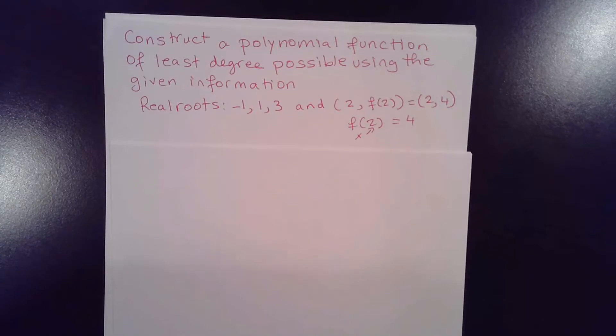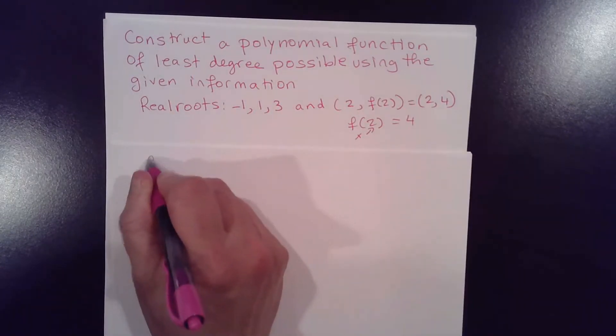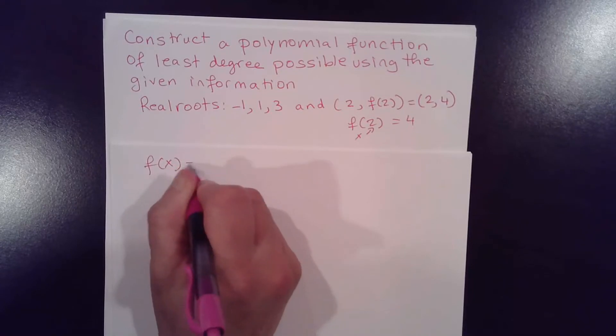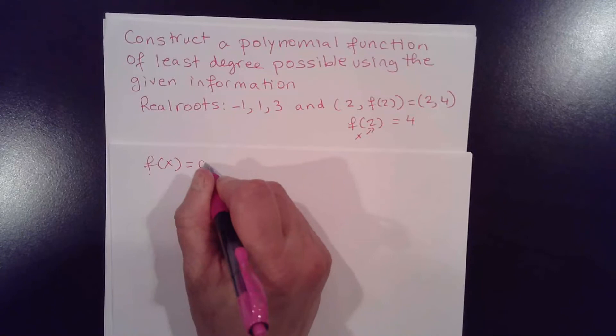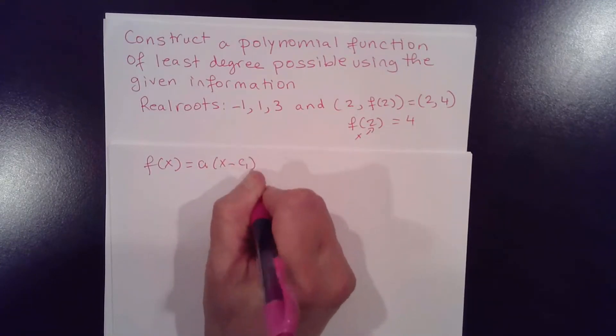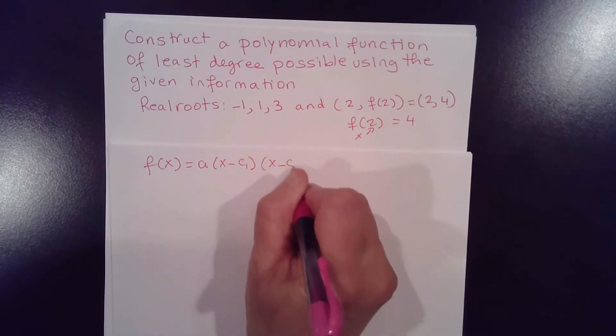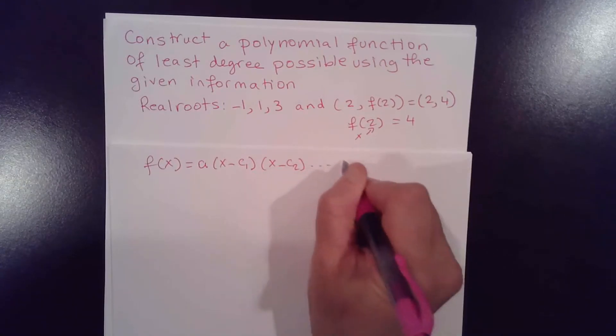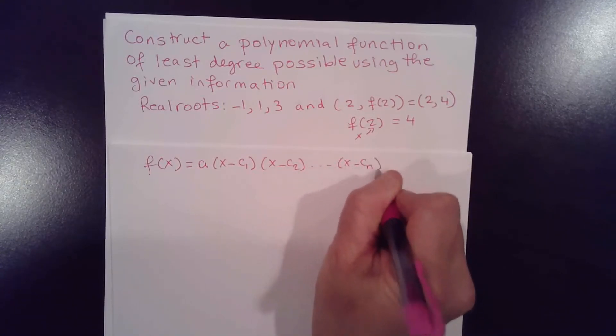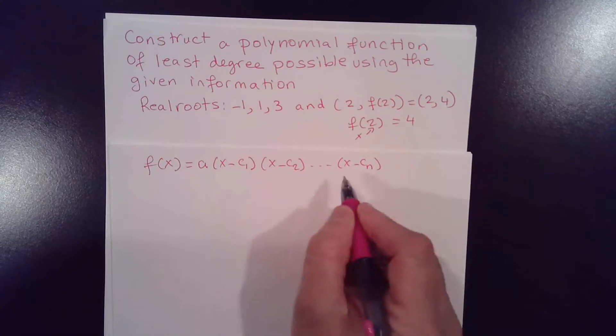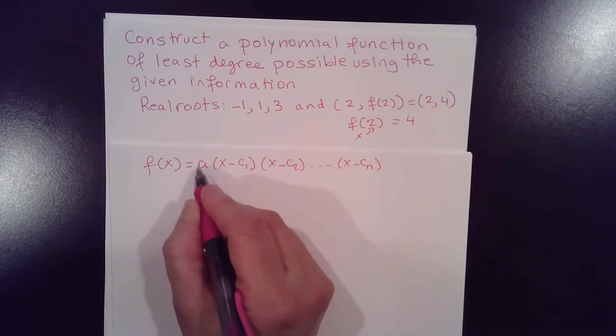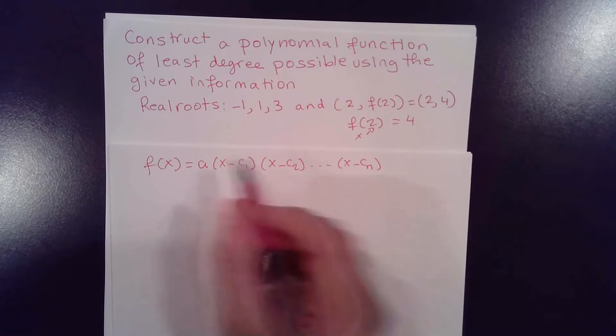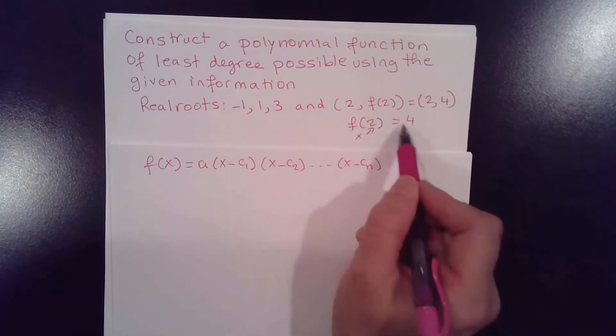Now to write an equation, to write the equation of the polynomial, we need the roots. So you have f(x) equal to a times x minus c1 times x minus c2 to x minus cn, where c1, c2, c3, all the way to cn are the roots. And a is a number, non-zero number, and it's determined by the initial condition we have here.